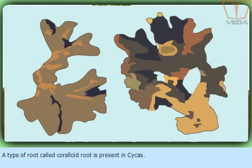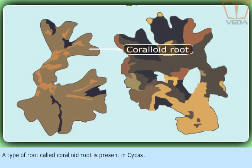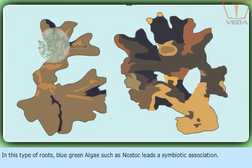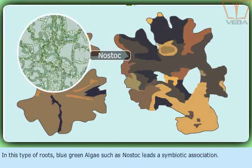A type of root called coralloid root is present in Cycas. In this type of roots, blue-green algae such as Nostoc leads a symbiotic association.